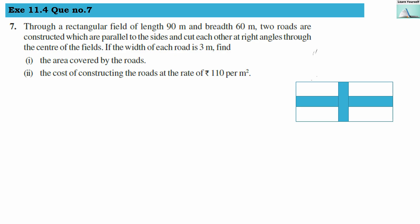Welcome to Learn Yourself. Exercise 11.4, question number 7. Through a rectangular field of length 90 meters and breadth 60 meters — this length is 90 meters and this breadth is 60 meters.